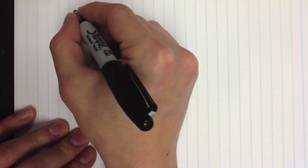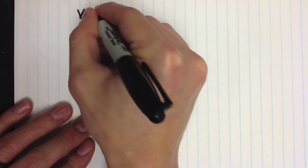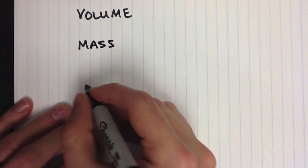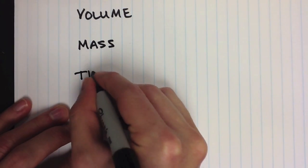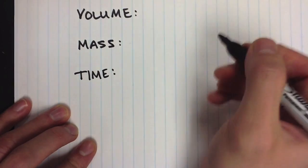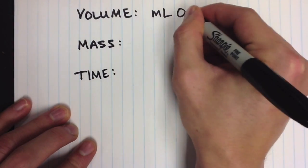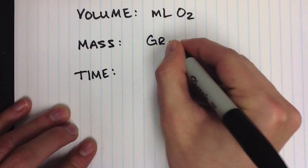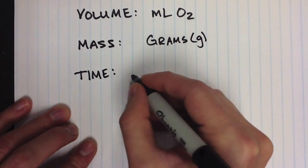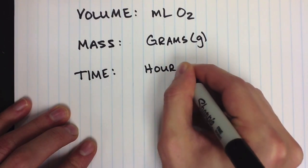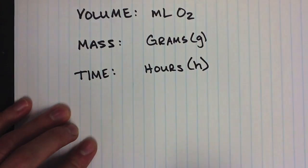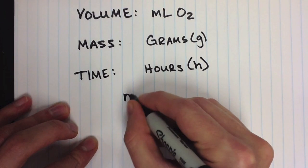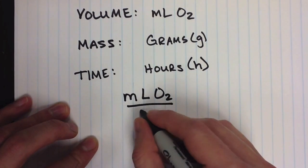There were three units utilized throughout this experiment: volume, mass, and time. Volume was measured in milliliters of oxygen, mass was measured in grams, and time was measured in hours. Together, we will use these three units of measurement as a representation of our metabolic rate — that is, milliliters of oxygen consumed for every gram hour.